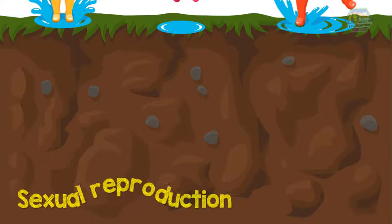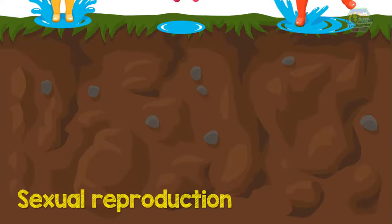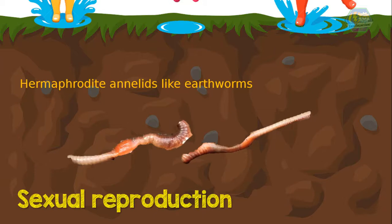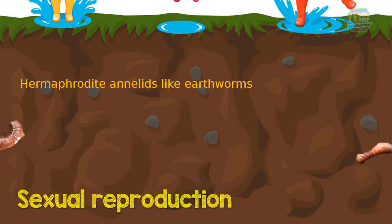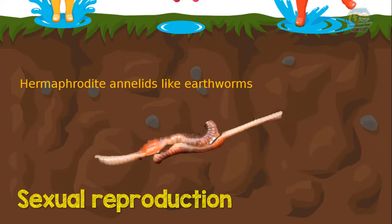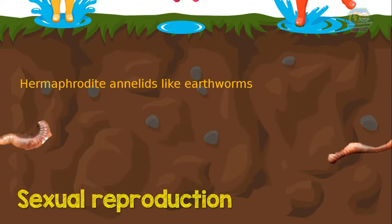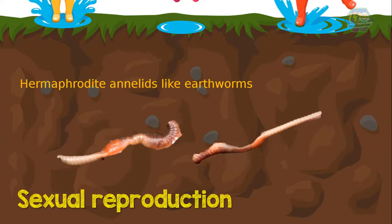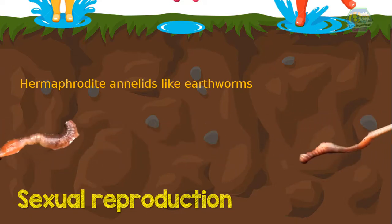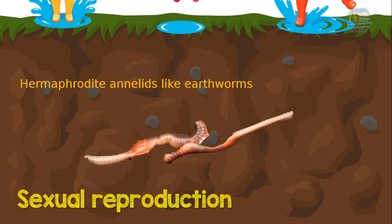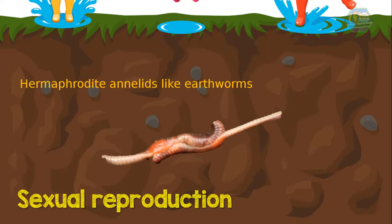In sexual reproduction, hermaphrodite annelids like earthworms mate by copulation. Two worms attracted by each other's secretions lay their bodies together with their heads pointing in opposite directions. Fluid is transferred from the male pore to the other worm.